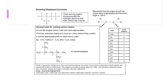The priority order for functional groups is: carboxylic acids and their derivatives, nitrile, aldehyde, ketone, alcohol, and then amines. So alkene has less priority than alcohol, and we give priority to alcohol.